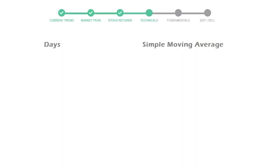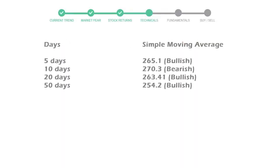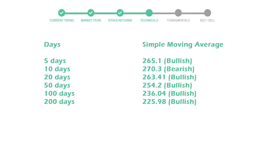Now let's have a look at simple moving average data. The five-day average for Stryker Corporation is moving with 265 towards a bullish indication.